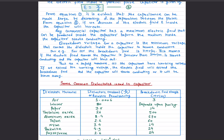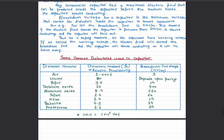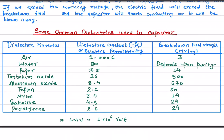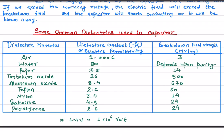Here I have listed some dielectrics with their breakdown fields. For example, paper has a dielectric constant of 3 to 3.5, and its breakdown field is 14 megavolts per meter. Remember, one megavolt is 1×10⁶ volts. That means if the electric field across the capacitor is greater than 14 megavolts per meter, the paper dielectric will start conducting and the capacitor will blow away.